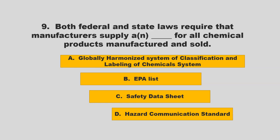Both federal and state laws require that manufacturers supply a blank for all chemical products manufactured and sold. Options: Globally Harmonized System of Classification and Labeling of Chemical System, EPA List, Safety Data Sheet, or Hazard Communication Standard. The correct answer is C: Safety Data Sheet.